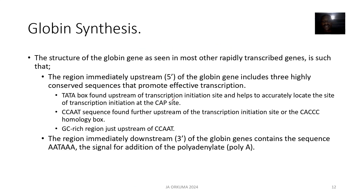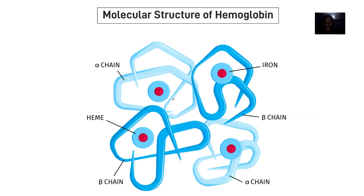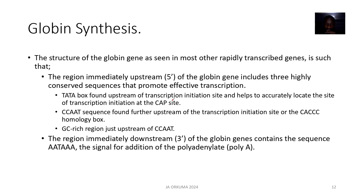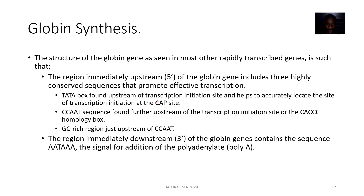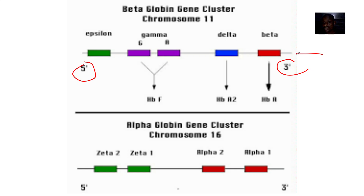The structure of the globin gene, as seen in most other rapidly transcribed genes, shows that the region immediately upstream of the globin gene contains three highly conserved sequences that promote effective transcription. The TATA box, found upstream of the transcription initiation site, helps to accurately locate the site of transcription initiation — the cap site. Downstream at the three-prime end, there is a sequence AATAAA which signals for addition of poly-A tails — a polyadenylation signal.